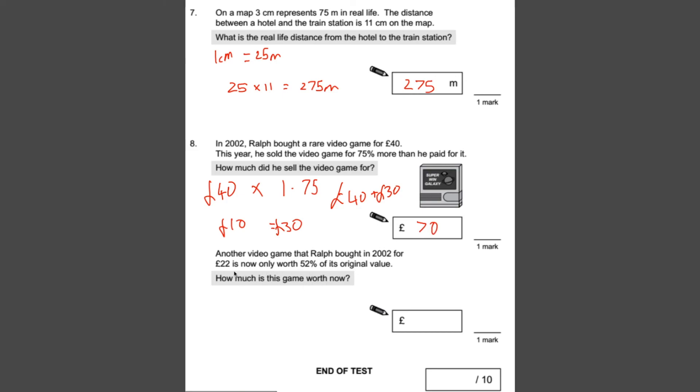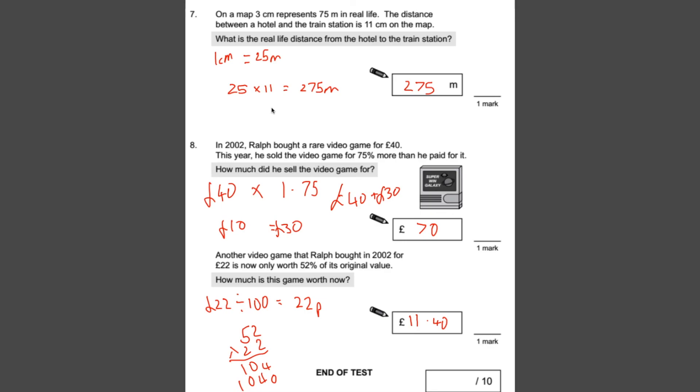Another video game that Ralph bought in 2002 for £22 is now only worth 52% of its original value. So what is it worth now? What we need to do is work out 1% of the value first. So to find 1% of something, we divide it by 100. So £22 divided by 100 is 22p. So that's what 1% is worth, 22p. Now we could do 22p times by 52 and that would give us the answer. Or you could do 22p times by 10, because that would give you 10%, and do it in chunks that way. It really depends on how you want to do it. There's no correct way of doing it, as long as you get the right answer. I'm just going to do 52 times 22, because I can do that a bit quicker. So 2 times 2 is 4, 2 times 5 is 10. Put a 0, 2 times 2 is 4 again, 2 times 5 is 10. Add it up, 1144. That's pence, so we need to divide that by 100. Our answer is £11.40.